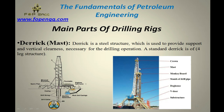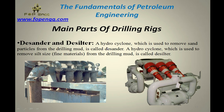Desander and desilter — a hydrocyclone used to remove sand particles from the drilling mud is known as the desander. A hydrocyclone used to remove silt-size fine material — very small material — from the drilling mud is known as the desilter. These are used during drilling to separate and remove sand particles as well as small-type particles from the drilling mud.